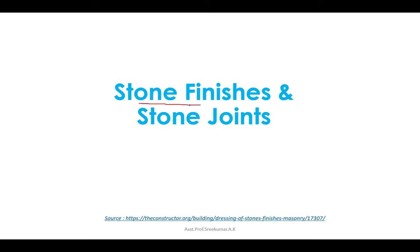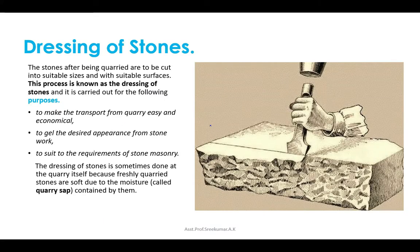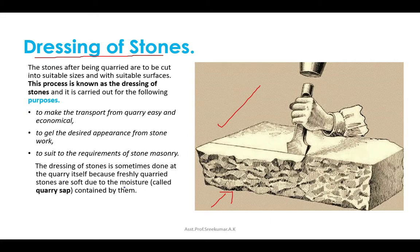Before getting into stone finishes, let's discuss the dressing of stones. The surface of stones obtained from quarry are rough and the blocks are irregular in shape and non-uniform in size. Hence dressing is essential. Dressing is sometimes done at the quarry itself because freshly quarried stones are soft due to the moisture contained by them, called quarry sap. Local workers are more experienced in dressing that particular type of stone, and transportation costs are reduced due to the reduction in weight.